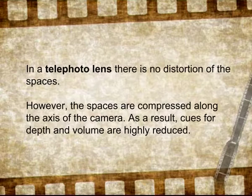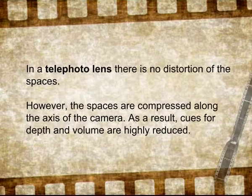The telephoto lens, or long focal length lens: unlike the wide-angle lens, in a telephoto lens there is no distortion of spaces. However, the spaces are compressed along the axis of the camera. As a result, cues for depth and volume are highly reduced. Two different planes appear to collapse into the same plane. If a crowded road is being shot with a telephoto lens, the crowd of people moving towards or away from the camera seems to be moving in one definite plane.